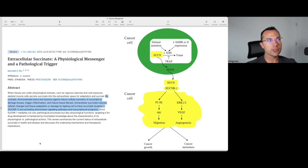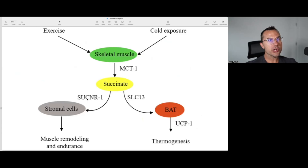Extracellular succinate induces cellular changes and tissue adaptation or damage by ligating cell surface succinate receptor 1 and activating downstream signaling pathways and transcriptional programs. Succinate is being transported outside the cell similarly to lactate, and it's going to have signaling that goes on both inside and outside cancer cells. What I wanted to show today was how succinate can lead to muscle tissue remodeling as well as excess thermogenesis.